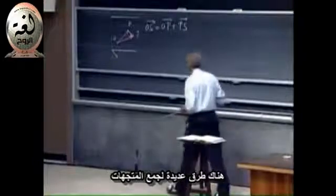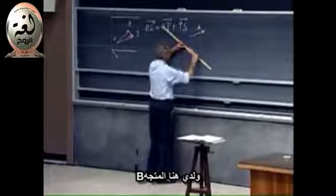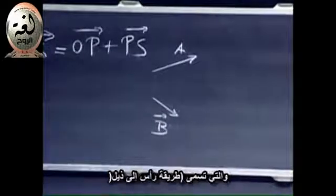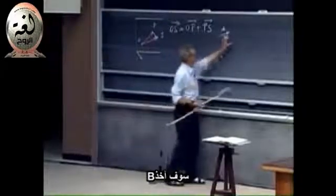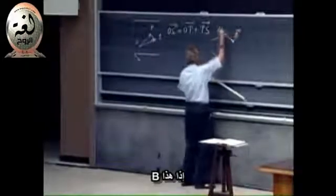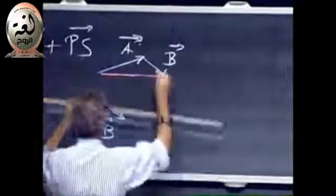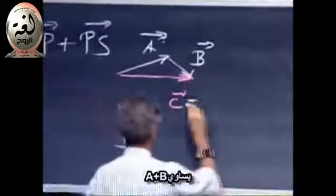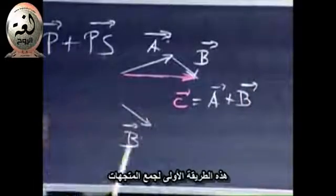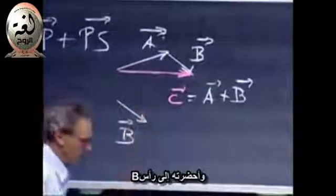There are various ways that you can add vectors. Suppose I have here a vector A and I have here a vector B. Then you can do it this way, which I call the head-tail technique. I take B and I bring it to the head of A. So this is B. This is a vector. And then the net result is A plus B. This vector C equals A plus B. That's one way of doing it. Doesn't matter whether you take B, the tail of B to the head of A, or whether you take the tail of A and bring it to the head of B. You will get the same result.